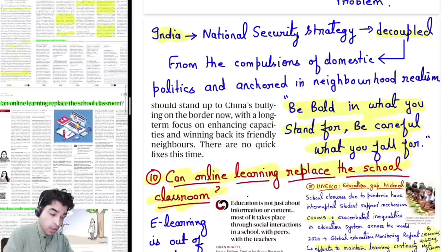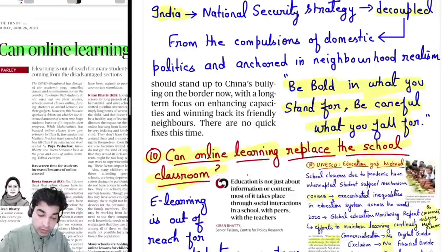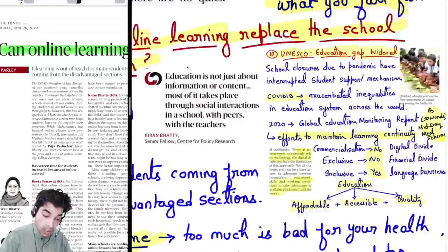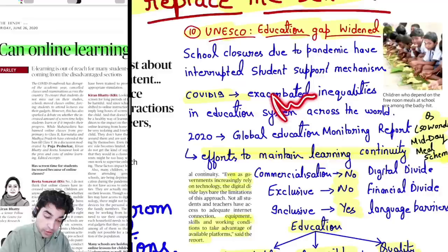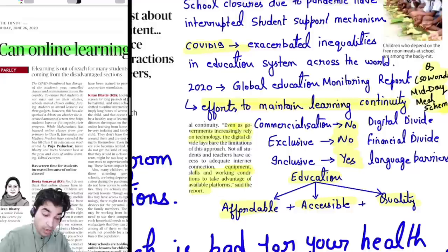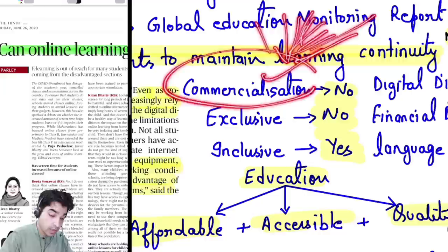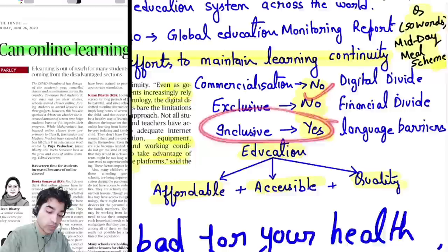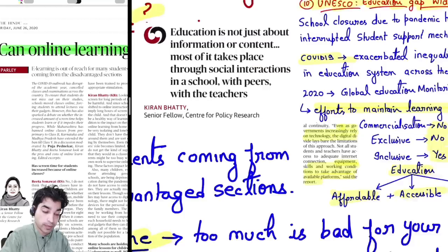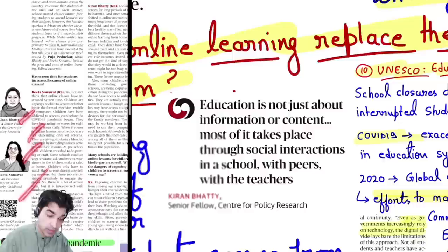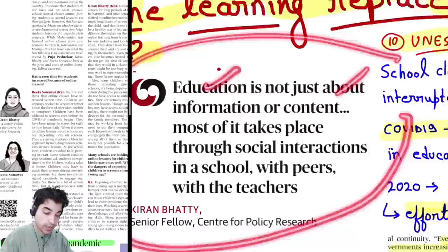Tenth news: can online learning replace the school classroom? There are many talks that digital will completely replace offline — no, that should not happen and should not be allowed. Yesterday we saw a very good UNESCO article — the education gap is widening. Digital education is causing a digital divide, and there is too much commercialization with large commercial sector corporates entering education. This is not good for education — education should be inclusive, affordable, accessible, and quality.